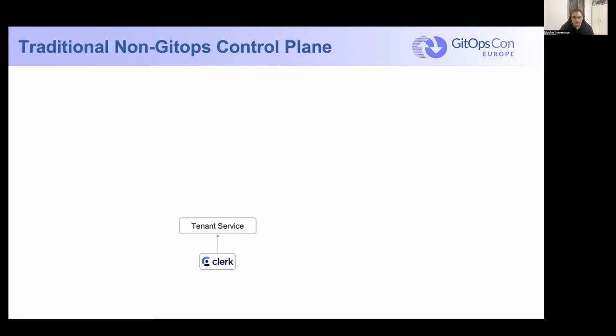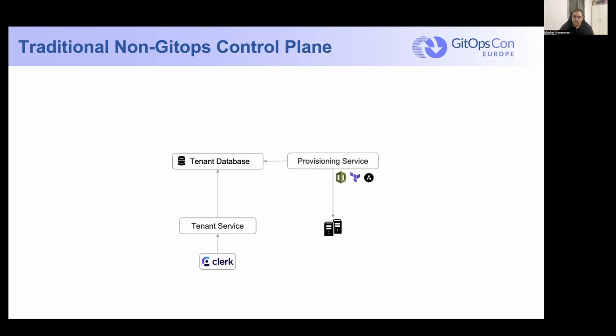What does a non-GitOps control plane look like and what are some of the challenges? Starting with a typical operation using Clerk — a user authentication and tenant management system we use at Flanksource. A request comes in, hits a database, and gets stored there. It might go into an event queue for an event sourcing system. From that database, a provisioning service creates the resources — this could be a combination of Ansible, Terraform, CloudFormation, scripts, or a full framework. Once that initial provisioning is done, you normally need a management UI on top of this that speaks to your provisioning service and other services to get the state of infrastructure and tenants so that day-two operations can be performed.